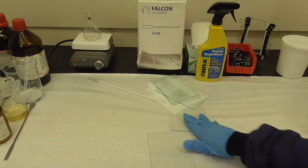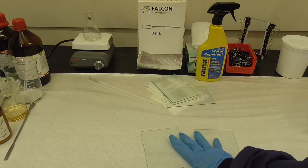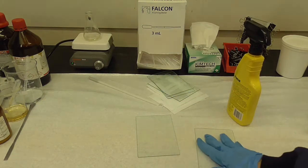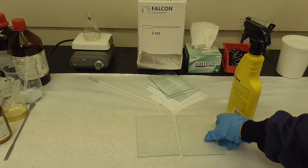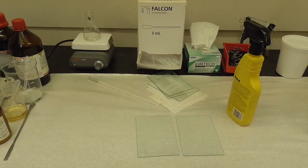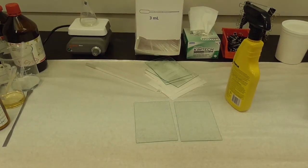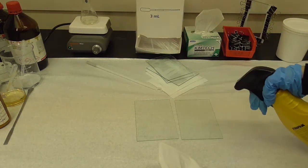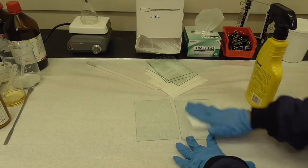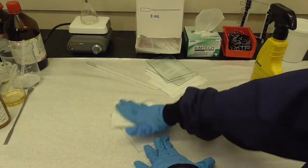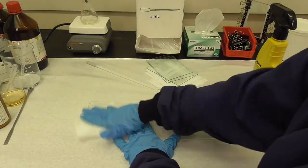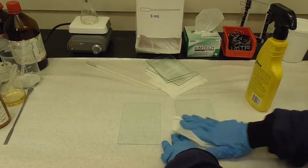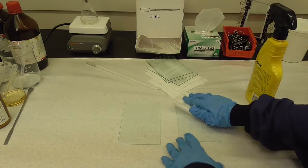Before you make the mold you want to coat your glass with the mold release and we just use Rainex. So you just spray the Rainex on the glass and dry it off. Then coat both sides so you don't have to remember which side you did.